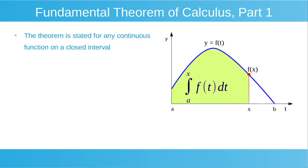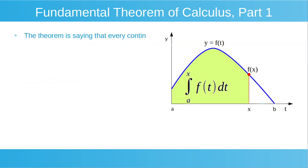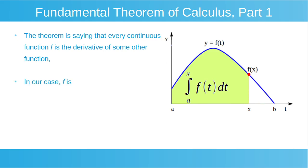We can talk a bit more about the meaning of this theorem. The theorem is stated for any continuous function on a closed interval, and it's saying that every continuous function has an antiderivative. An antiderivative of a function returns the original function when it's differentiated. In this case, our antiderivative is capital F of x, with dF/dx being equal to f of x. The theorem is saying that every continuous function f is the derivative of some other function — in our case, capital F of x, expressed as the integral from a to x of f of t dt.